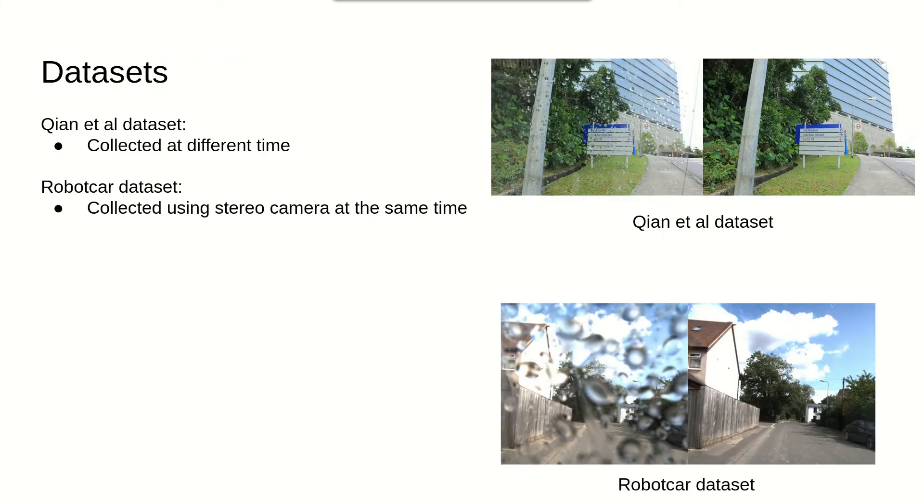We use Qian and RoboCard, two well-aligned real-world datasets for training and evaluation. Because they provide well-aligned rain drop and clean image paired data, we can use PSNR and SSIM to benchmark the rain drop removal performance.